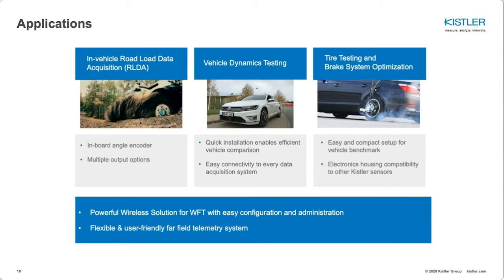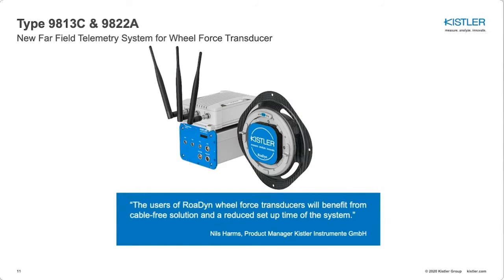This is our new far-field telemetry system for wheel force transducers. On the left side, the onboard unit type 9813C, and on the right side the wheel unit 9822A. Users of the wheel force transducer will benefit from cable-free solutions and the reduced setup time of the system.